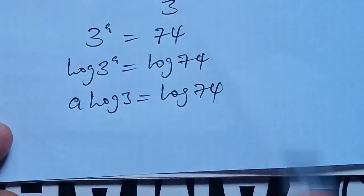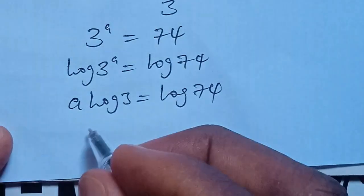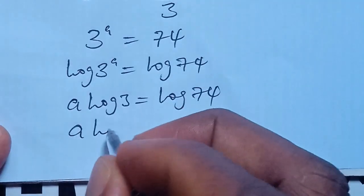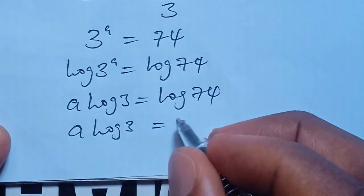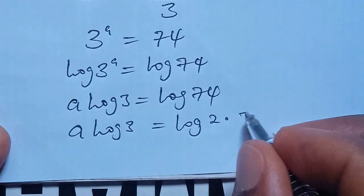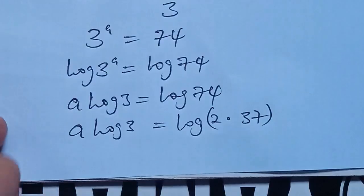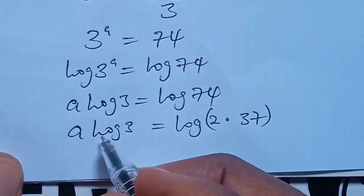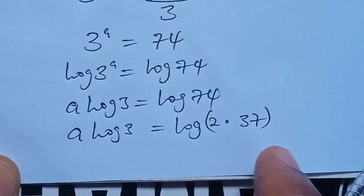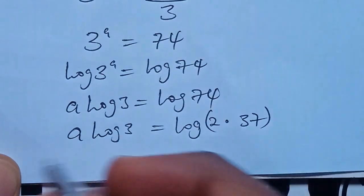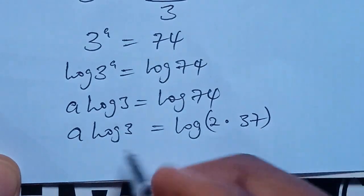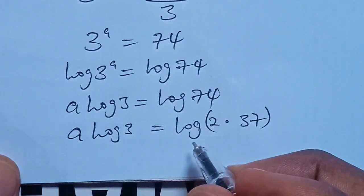And we have A log of 3 equal to log of 74. We can also simplify log of 74 as A log of 3 equal to log of 2 multiplied by 37. Now, for the left hand side we want to isolate A, and for the right hand side we need to simplify using the log identity as well. So, we divide both sides by log of 3 to isolate A on the left hand side.